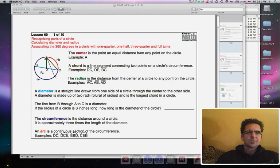A radius is the distance from the center of the circle to the outside edge of the circle. And so AC is a radius, AB is a radius, and AD is a radius. Three different radii, plural of radiuses, radii, make up that circle.